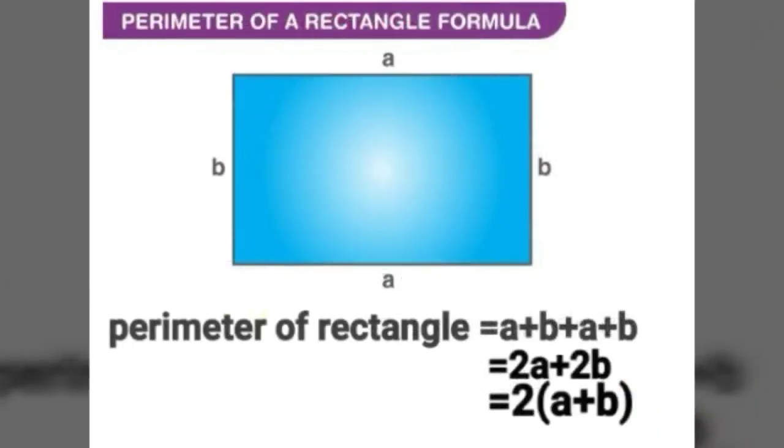Perimeter of Rectangle equal to 2 of A plus B. Here A means length, B means breadth.